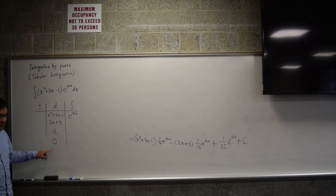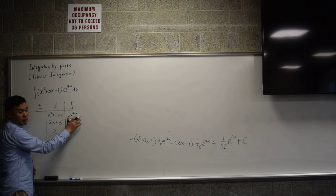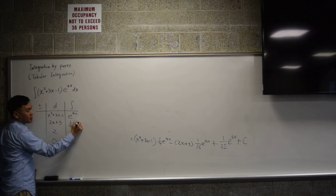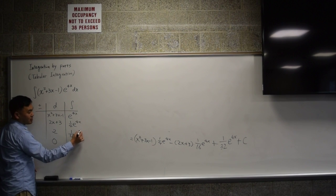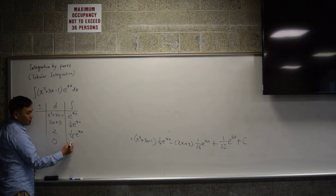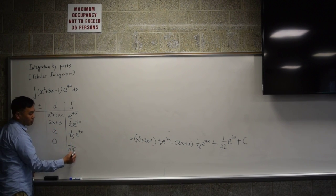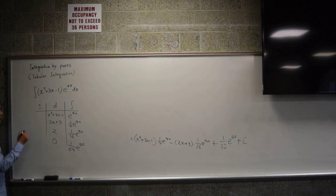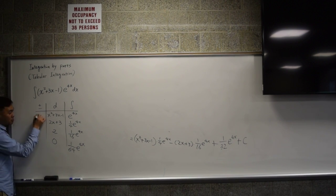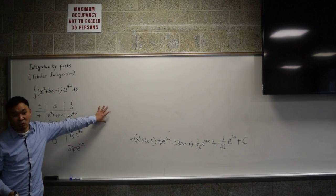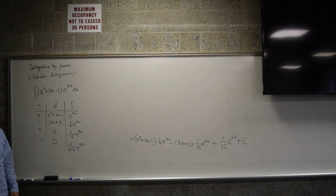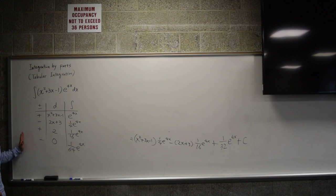In the signs column, you start with plus and alternate: plus, minus, plus, minus. You can already see that all the calculations from integration by parts appear in this table. Some smart person looked at integration by parts and decided it was confusing, so they made a table to simplify it — that's what tabular integration is.